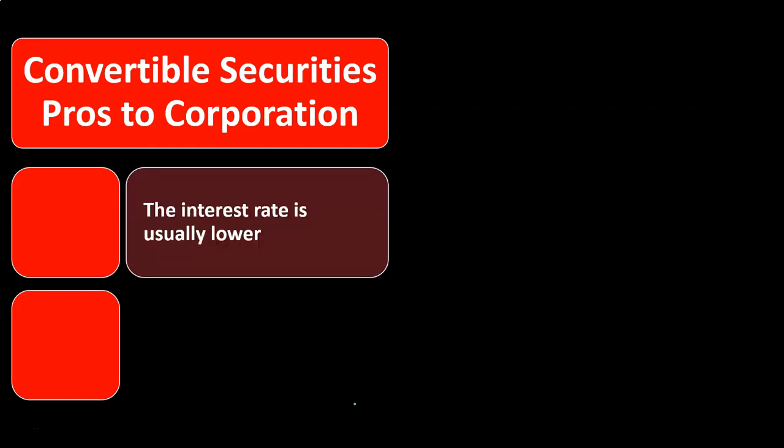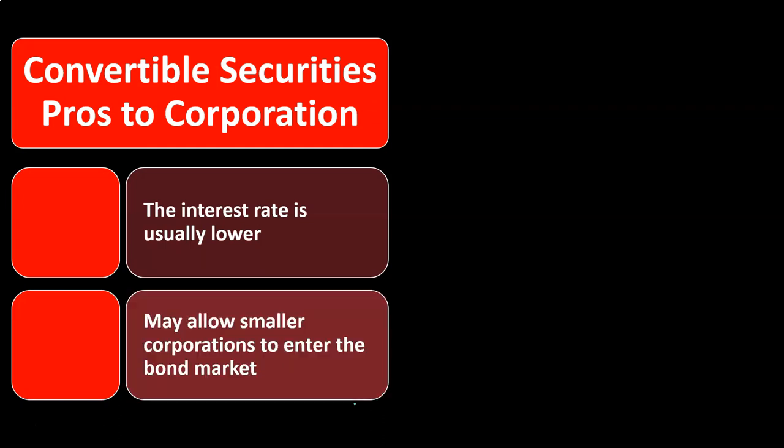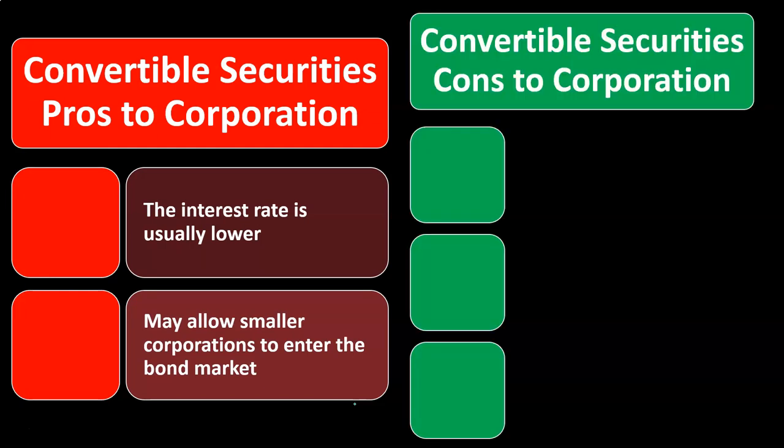Convertible security pros to the corporation: the interest rate is usually lower because they're giving the conversion option. Even though the conversion option is more complex and the corporation doesn't have as much control over it, by doing so they can issue at a lower interest rate. This may allow smaller corporations to enter the bond market, competing in a way they may not otherwise be able to without conversion options available.